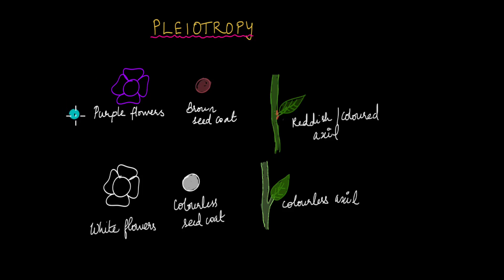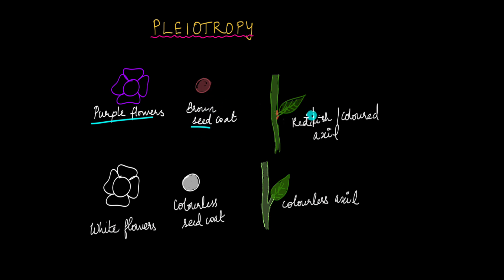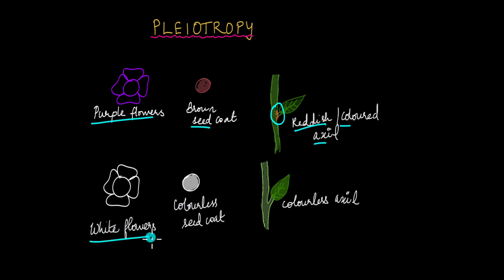When Mendel was performing experiments with pea plants, he noticed something quite interesting. He noticed that in a population of plants, plants that produced purple flowers always produced seeds that had a brown seed coat and always had a coloured axil — the space between the leaf and the stem, which was almost always reddish. In contrast, plants that had white flowers produced seeds with a colourless seed coat and also had colourless axils.